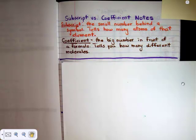The coefficient is the big number in front of a formula and tells you how many different molecules there are. Let's take a look at some examples to see how subscripts and coefficients affect formulas.